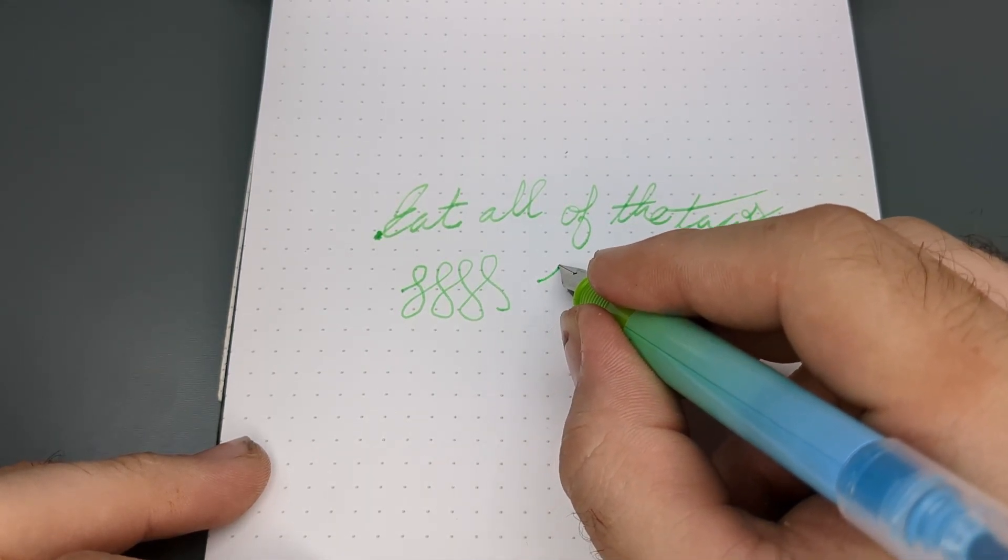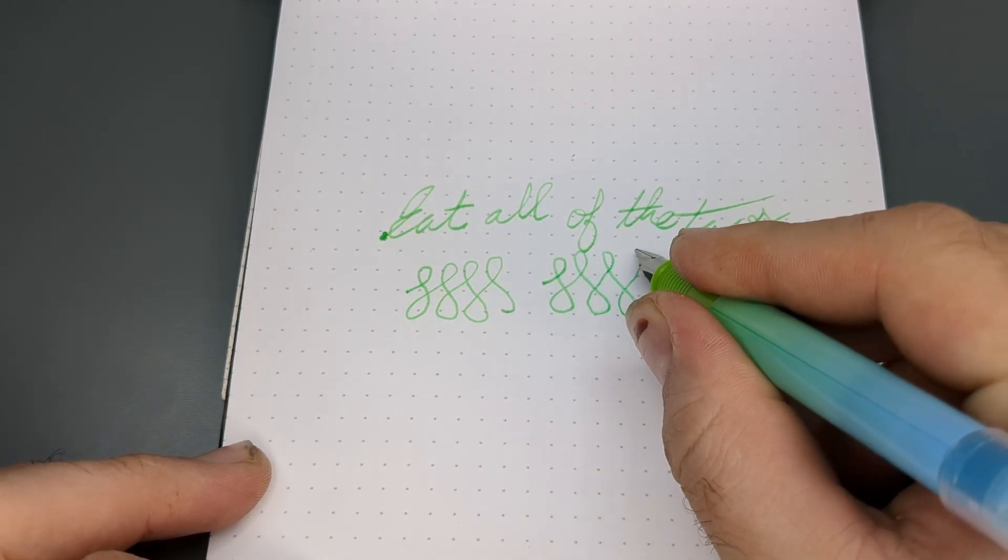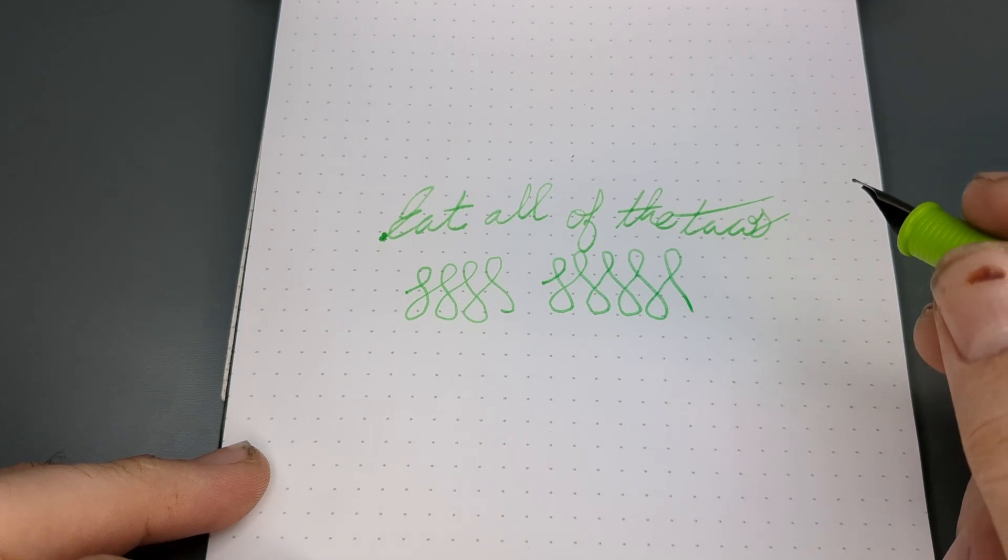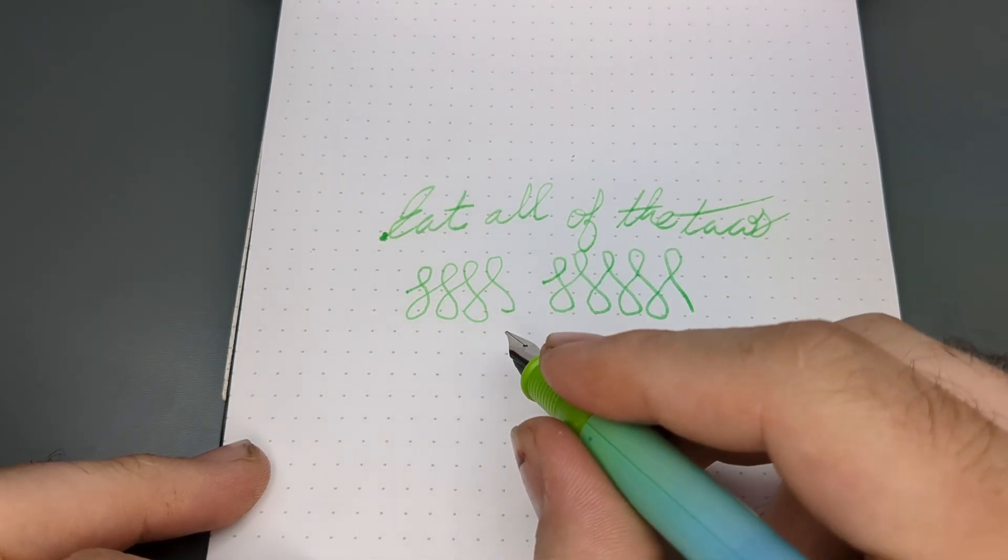Adding a bit more pressure to what I would consider a heavy hand, but not intentionally putting any downward force. You may notice the lines are a bit wider than the original light pressure, and you may notice that the nib will grab the page a bit more as you go in horizontal directions.